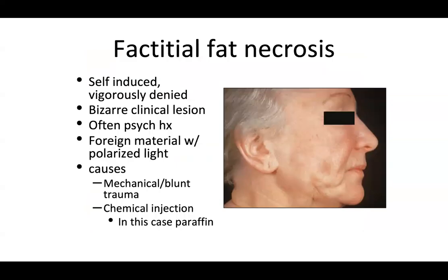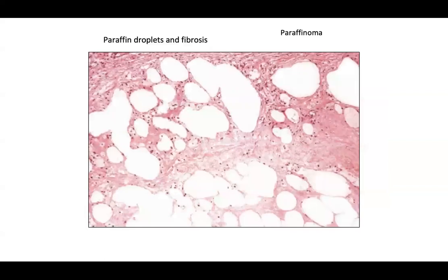Factitional fat necrosis is a type of paniculitis that is self-induced, typically presenting with bizarre clinical lesions and often having a psychiatric comorbidity. On biopsy, you can find foreign material with polarized light. Causes include mechanical and blunt trauma as well as chemical injections — for example, paraffin injections. If the patient is injecting paraffin, you see droplets of empty space resembling Swiss cheese, with surrounding fibrosis from chronic inflammation and fibrotic remodeling.